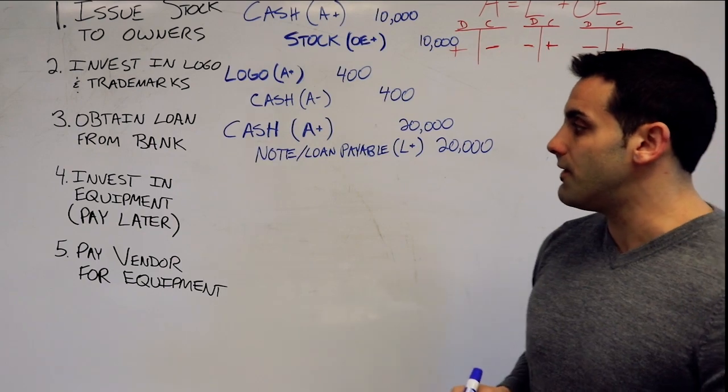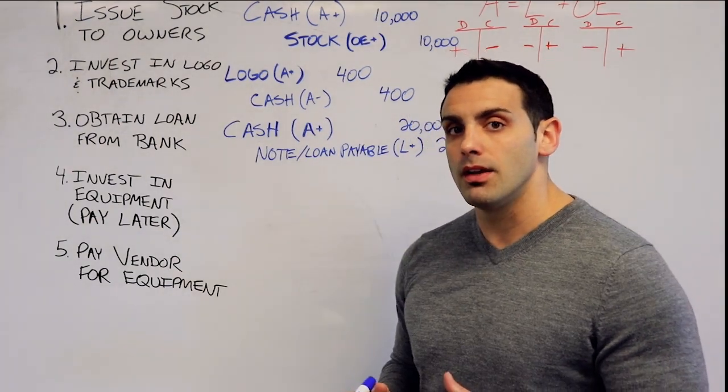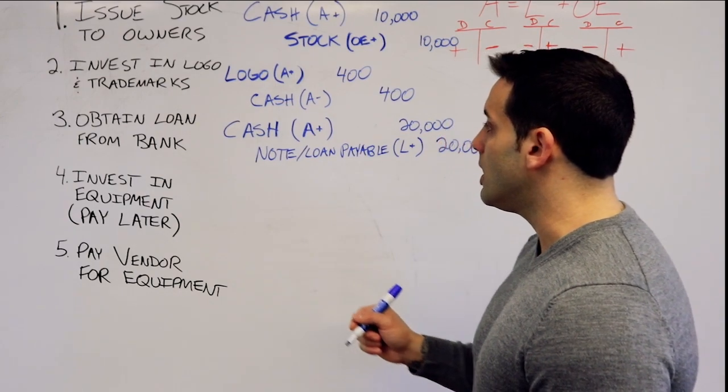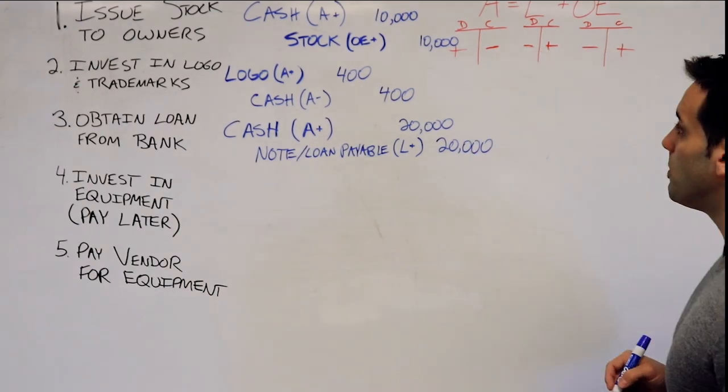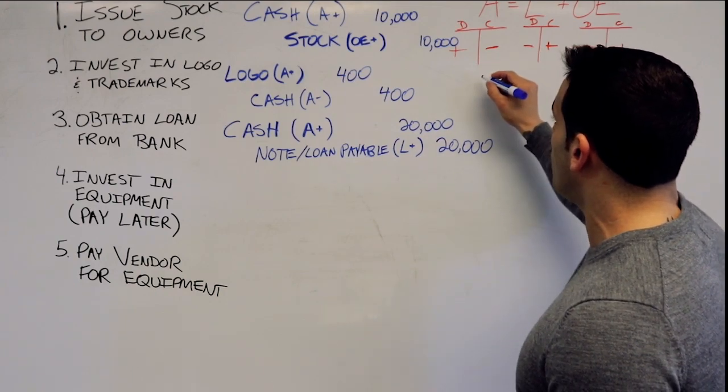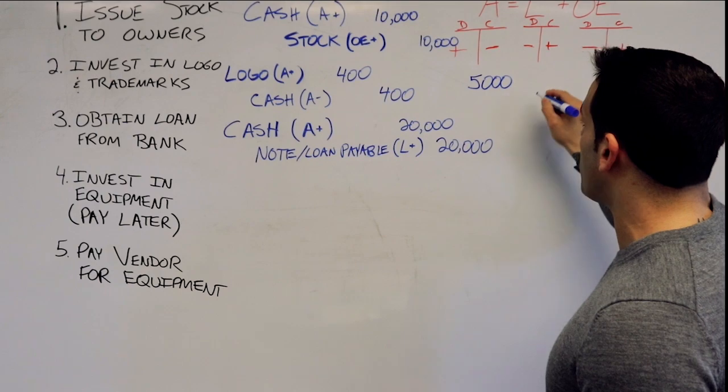Next, we're going to invest in some equipment, but we're not going to pay right away. The business is going to pay later. So what's going to happen here is equipment is an asset. Let's say our equipment costs us $5,000. Now let's analyze it in terms of the equation. So we're going to increase our assets by $5,000.